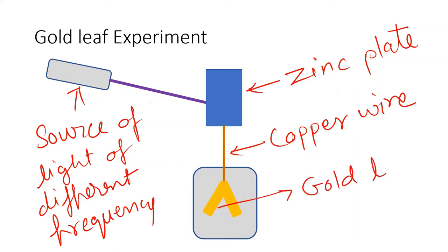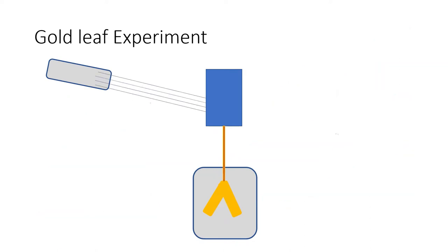Let us first of all assume that the zinc plate is negatively charged. As the zinc plate is negatively charged, the charges are flowing towards the gold foil, and the gold foils repel each other. That's why there is a separation between them.